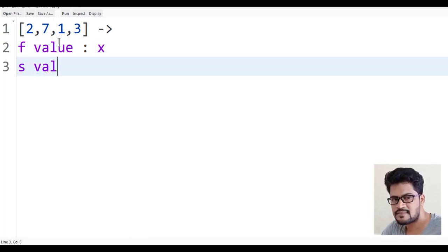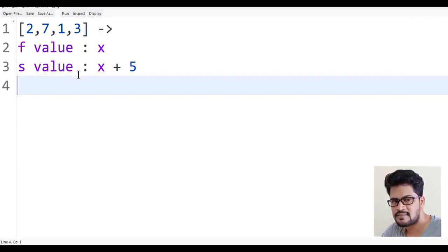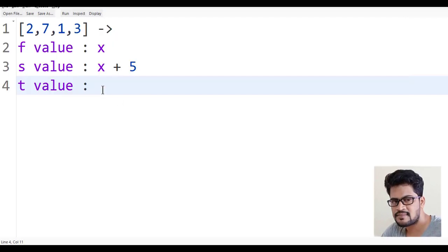So what about the second value? The second value will be x plus 5. See, a value followed by the value plus 5. And the third value will be value minus 1, so it will be x minus 1.